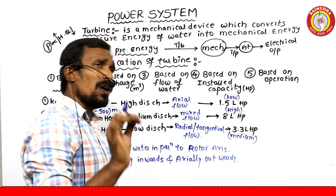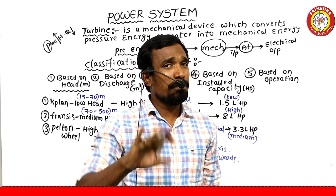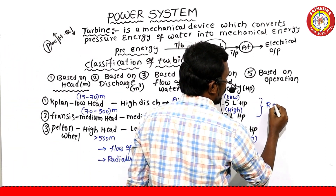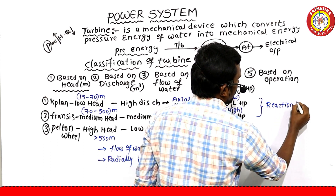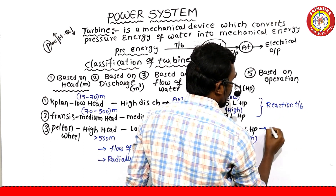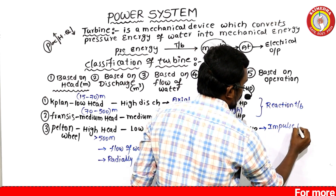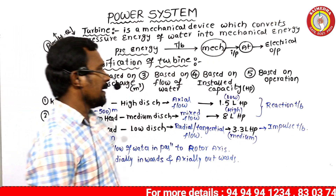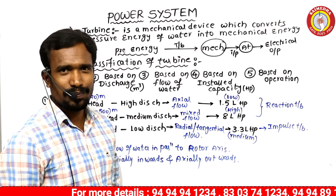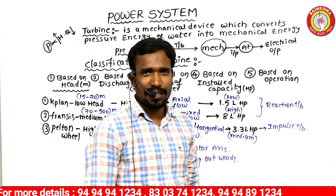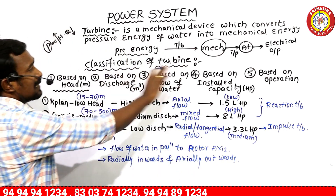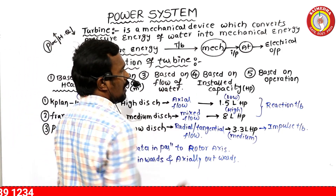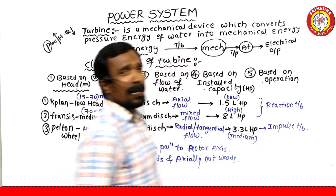Based on operation, turbines are classified as impulse turbines and reaction turbines. The Kaplan and Francis turbines are reaction turbines, while the Pelton Wheel is an impulse turbine. So the five classification bases are: head, discharge, flow of water, installed capacity, and operation.